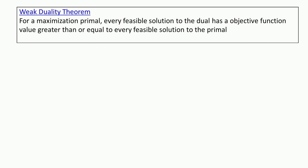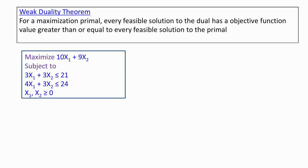Let us try to illustrate this theorem through some examples. We start with the familiar example — the same problem we have been solving to understand many things about linear programming. It is a maximization primal: maximize 10X1 plus 9X2, subject to 3X1 plus 3X2 ≤ 21, 4X1 plus 3X2 ≤ 24, and X1, X2 ≥ 0.